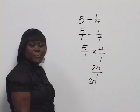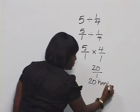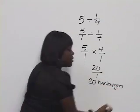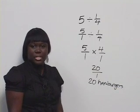So, therefore, we know that 5 pounds of meat will give us 20 hamburgers. Now, let's look at our next sample application problem.